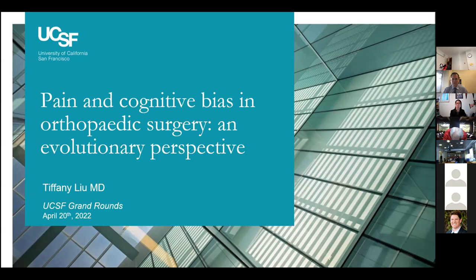I hope I'm able to bring a different perspective to a challenging problem that we all face. I'm happy to announce that we have Dr. David Ring joining us from UT Austin. Dr. Ring is the upper extremity clinical director of UT Health Austin's Musculoskeletal Institute and the associate dean for comprehensive care for the Dell Medical School Department of Surgery and Perioperative Care. He's one of the leading researchers on pain and cognitive bias in orthopedics, and we owe much of our understanding in this area to his work.